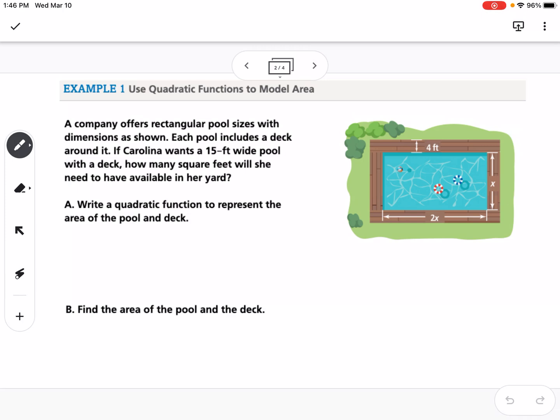You can see that the pool deck is 4 feet in addition to the dimensions of the pool. So that means if we're talking about the whole length of the pool, it would be 2x plus 4 in either direction. So that would be 2x plus 8. And then the width of the pool would be x plus 4 feet plus 4 feet, so that would be x plus 8.